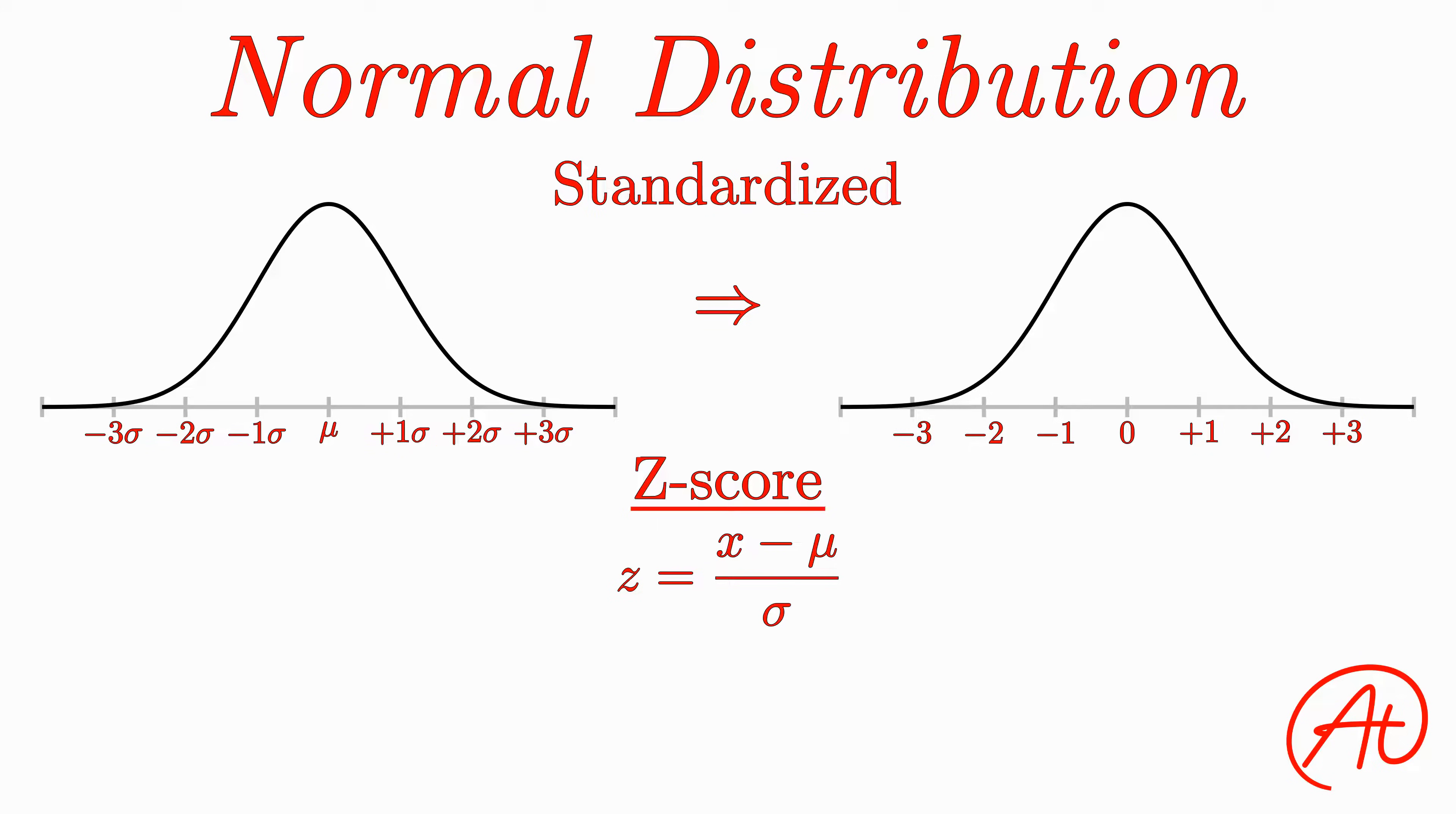Essentially what the z-score tells you is how many standard deviations a certain data point is away from the mean.